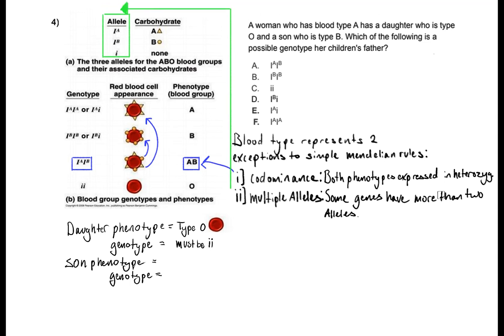For our son the problem states that our son is type B so our phenotype is going to be type B with those little circles and we know that our blood type either has to be IB, i or IB, IB.